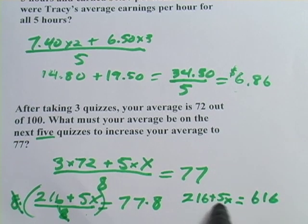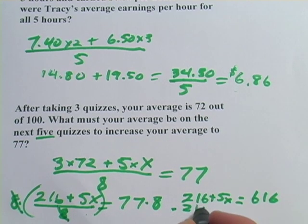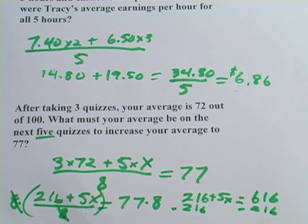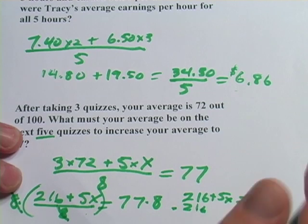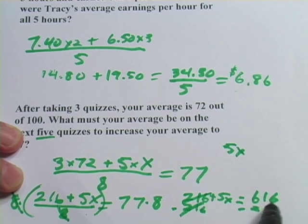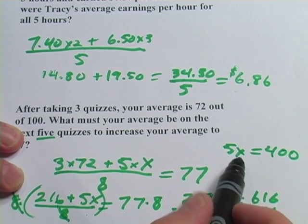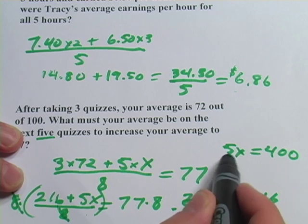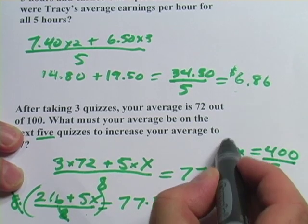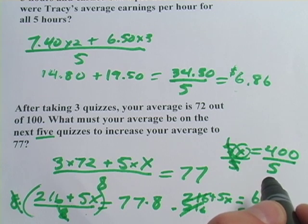Two more things going on: x is multiplied by 5, and there's a 216 added to it. We want to deal with the multiplication last, so first we subtract 216 from both sides. 216 minus 216 cancels out, leaving just 5x. And 616 minus 216 gives us 400. Last thing to do to get x alone: undo the multiplication by 5 by dividing both sides by 5. Those 5s cancel out, leaving x alone. 400 divided by 5 is 80.